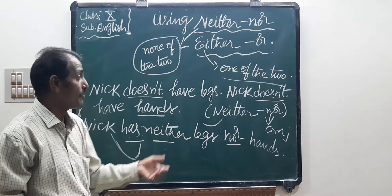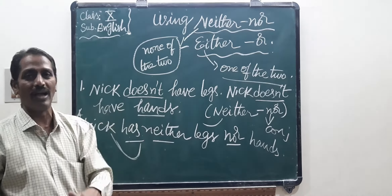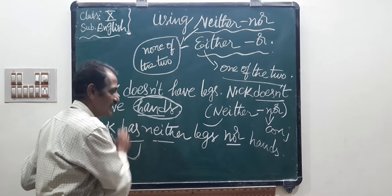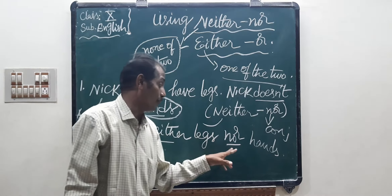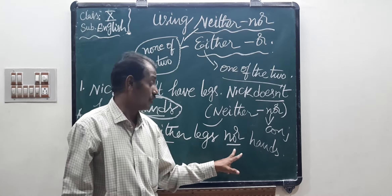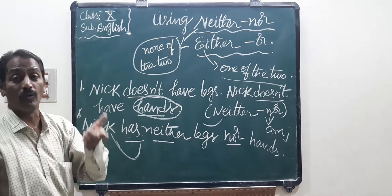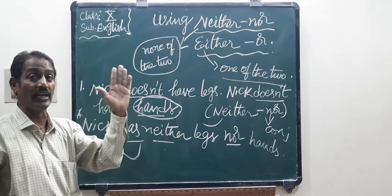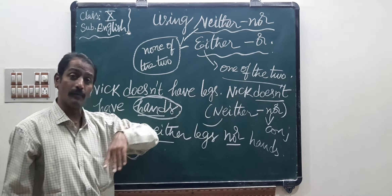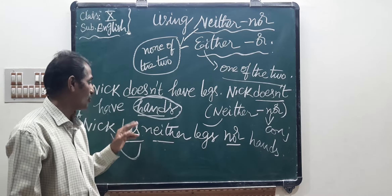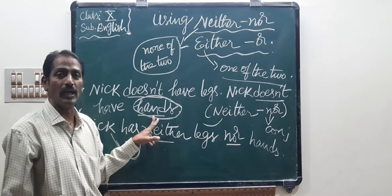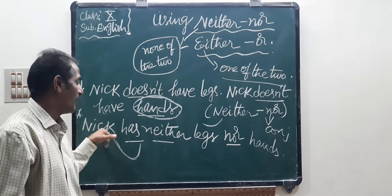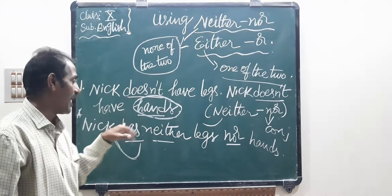When we go to the next sentence, the same subject is there, so we need not write it again. 'Doesn't' is replaced by 'neither.' The remaining word is only 'hands.' To join this, we use the conjunction 'nor.' So the second part of the sentence — ninety-eight percent repeated — is the same. We use 'nor' as a conjunction. So: Nick has neither legs nor hands.